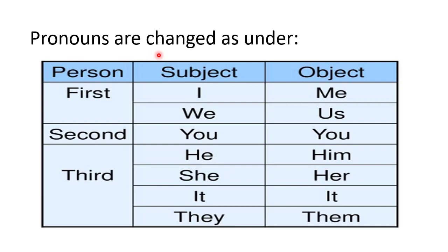Pronouns will change according to this table. If the subject is 'I,' in passive voice when making it the object, it becomes 'me.' 'We' changes to 'us.' 'You' remains 'you.' 'He' changes to 'him.' 'She' changes to 'her.' 'It' remains 'it.' And 'they' changes to 'them.' You have to learn this table.